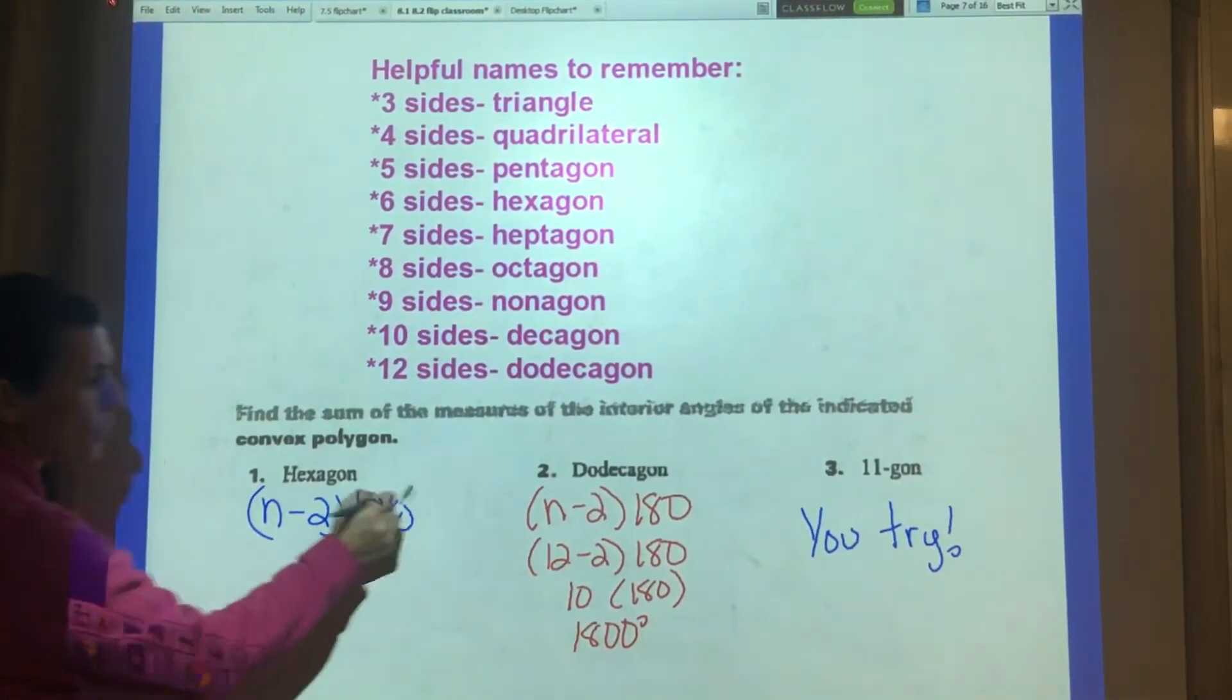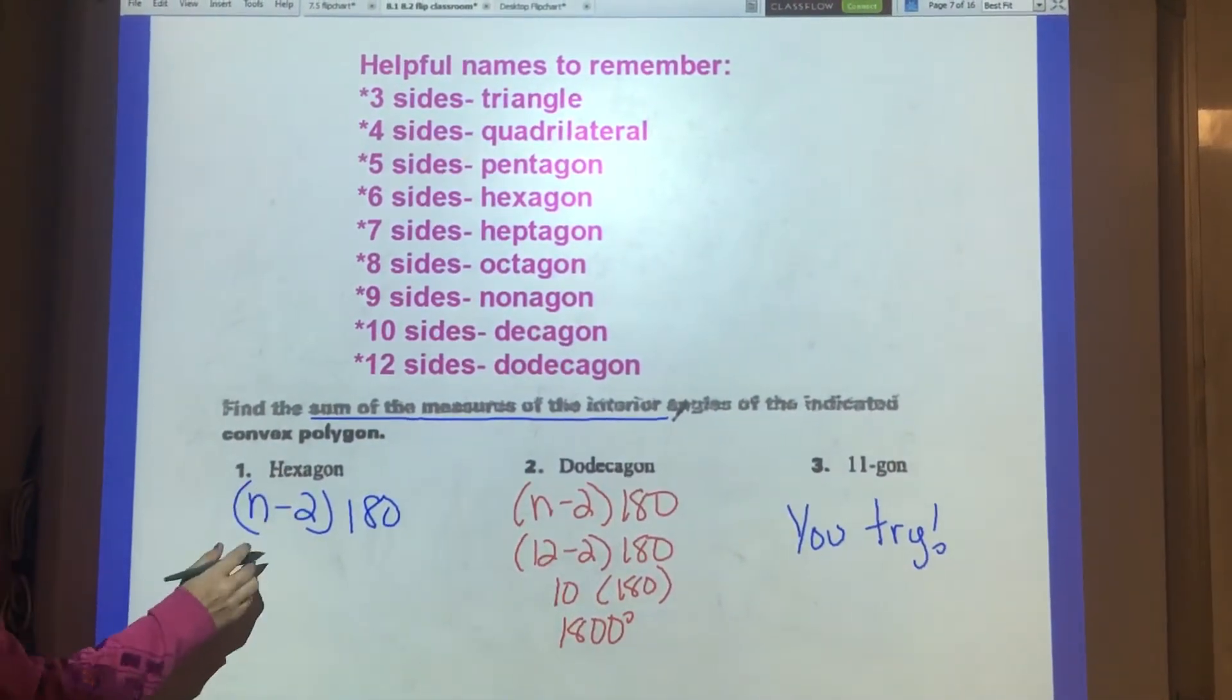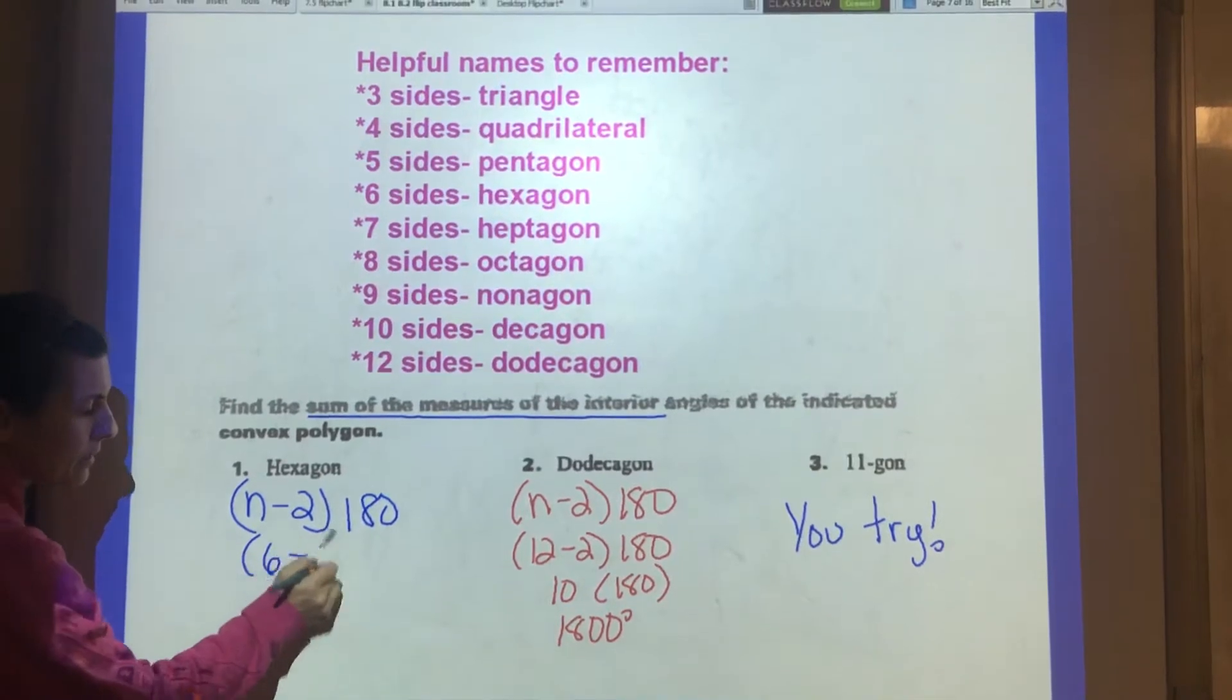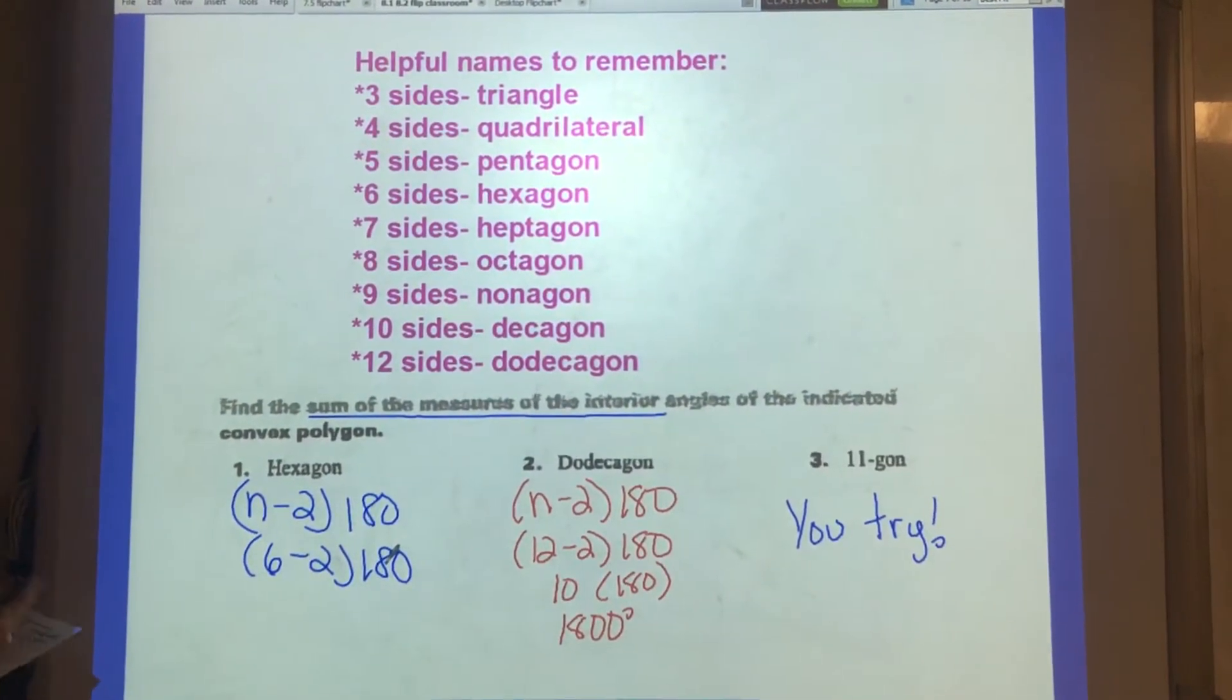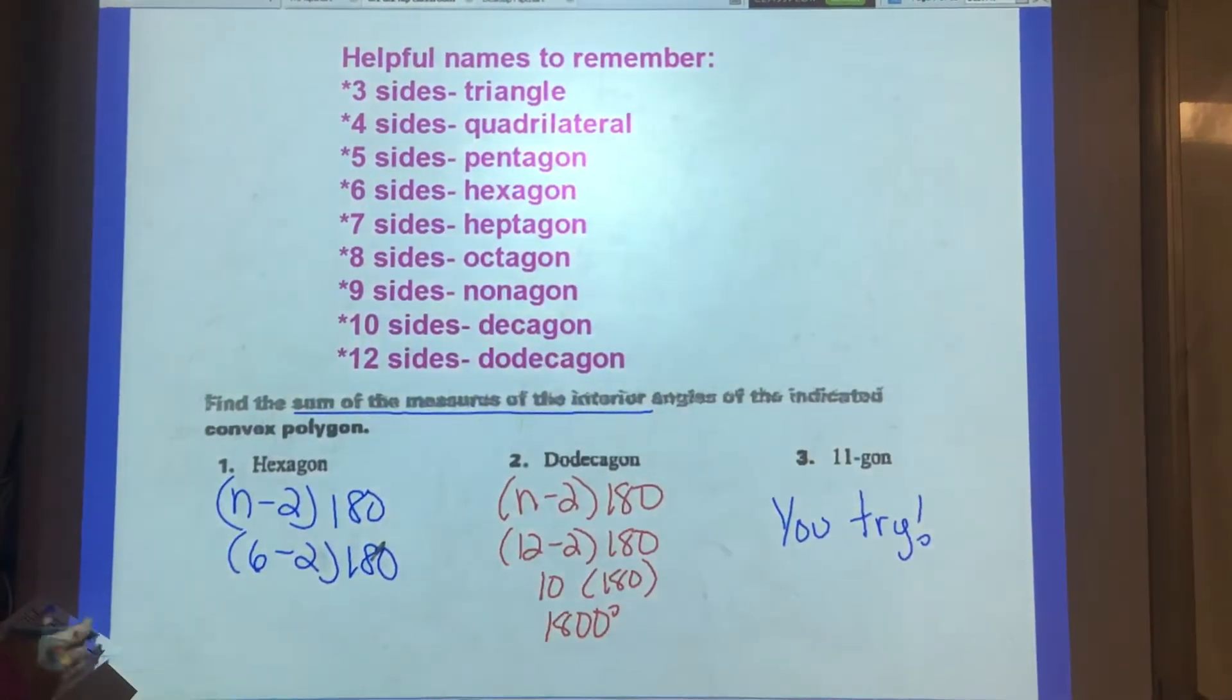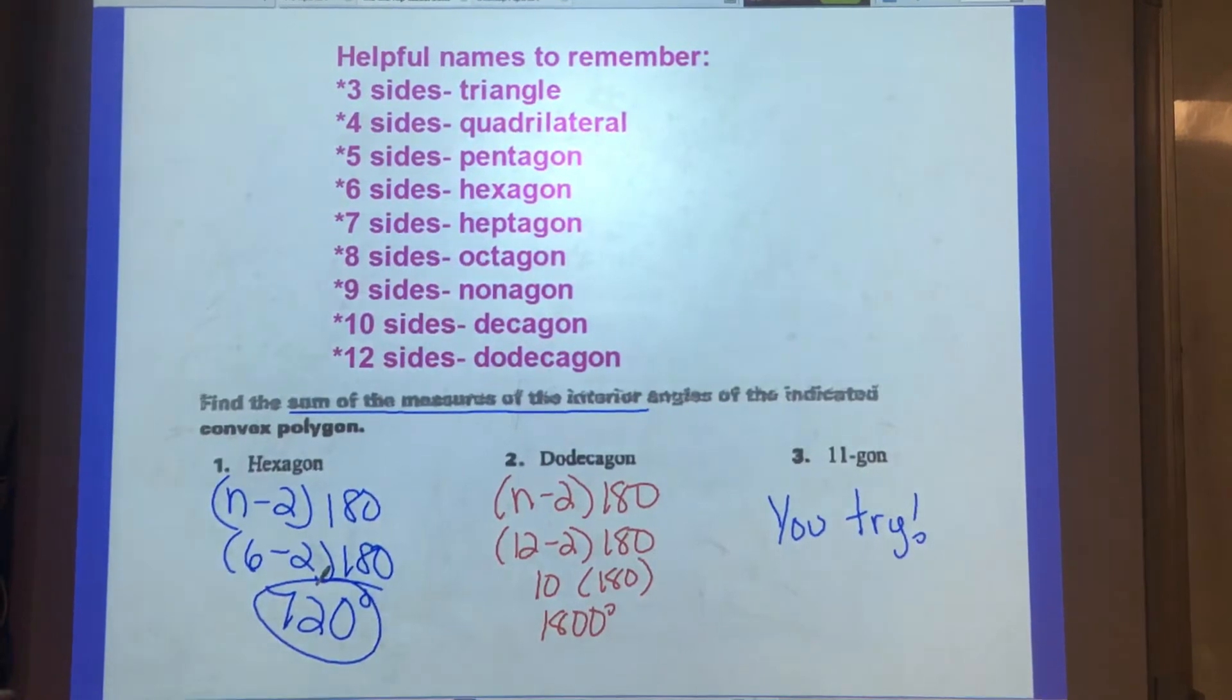n minus 2 times 180, to find the sum of the measures of the interior angles. We know that a hexagon has six sides, so we're going to plug six in for n. Six minus two is four times 180 gives you 720. So 720 degrees is the sum of all inside angles.